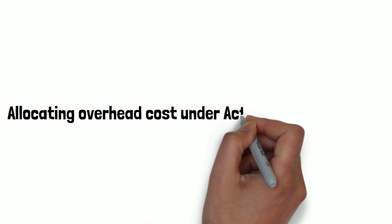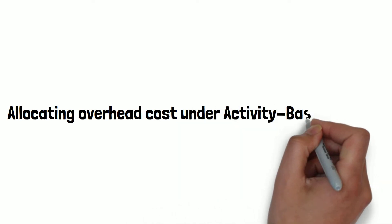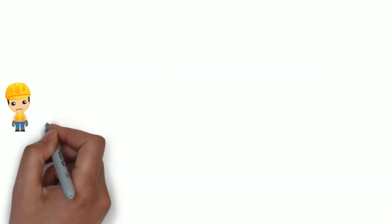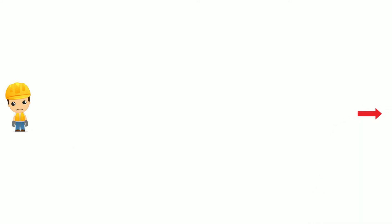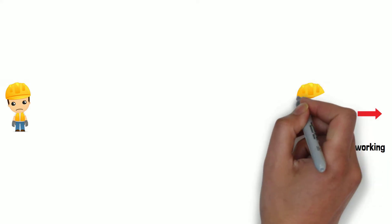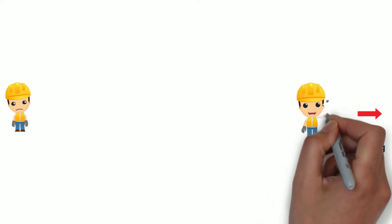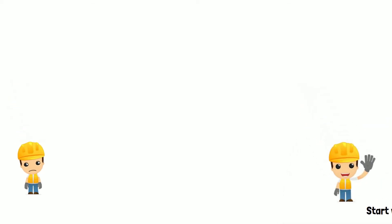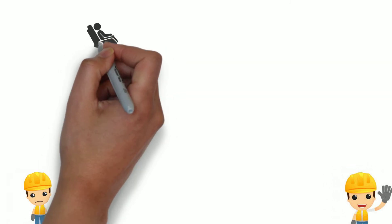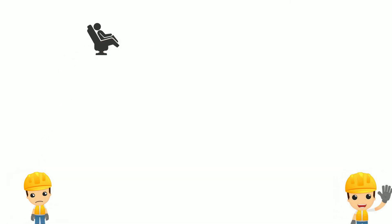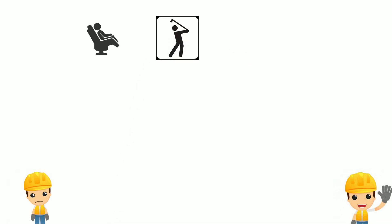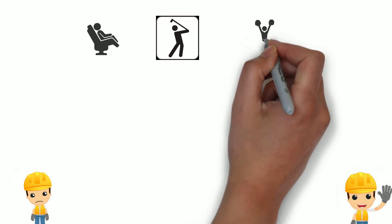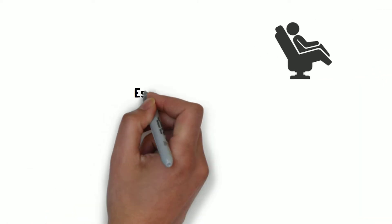Today, I'm going to show you how to allocate overhead costs under activity-based costing. Suppose that we have employees who do not want to work. It's very challenging work, they don't want to work, and they have to be really happy before they can go to work. So in order to make them happy, the company provides them different programs: a massage program, a golf entertainment program, and a cheerleader to cheer them up.